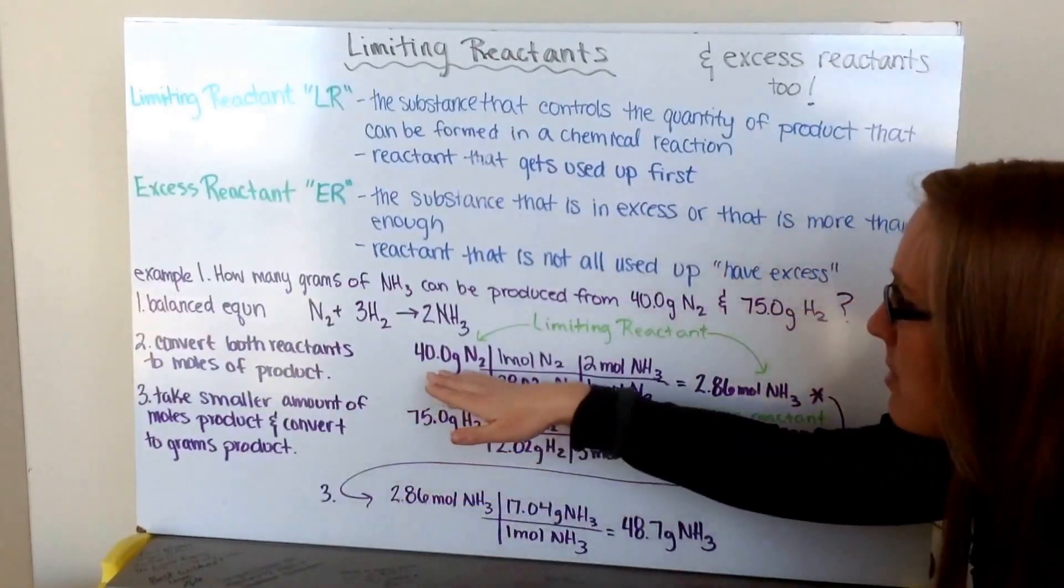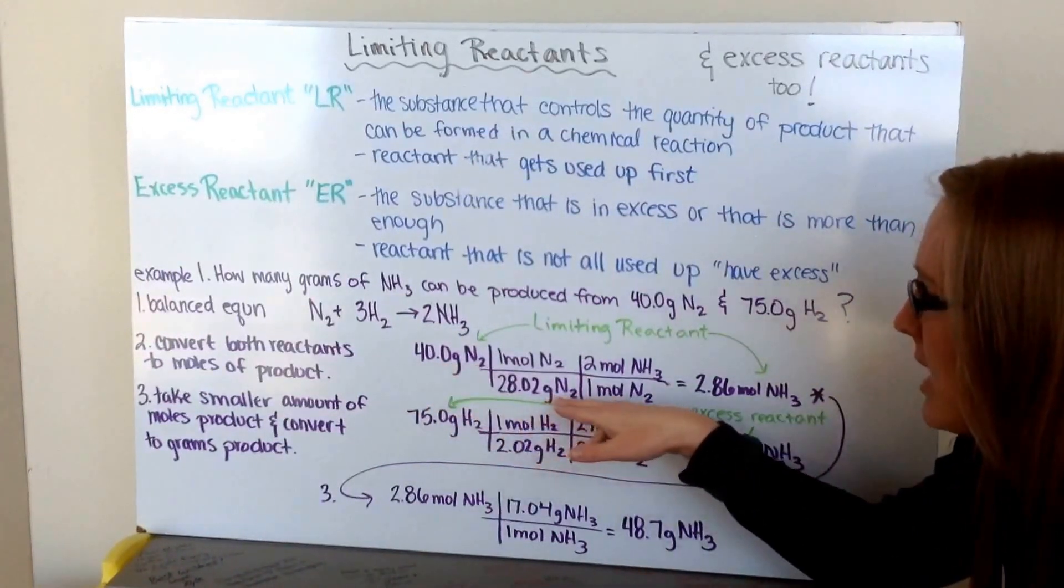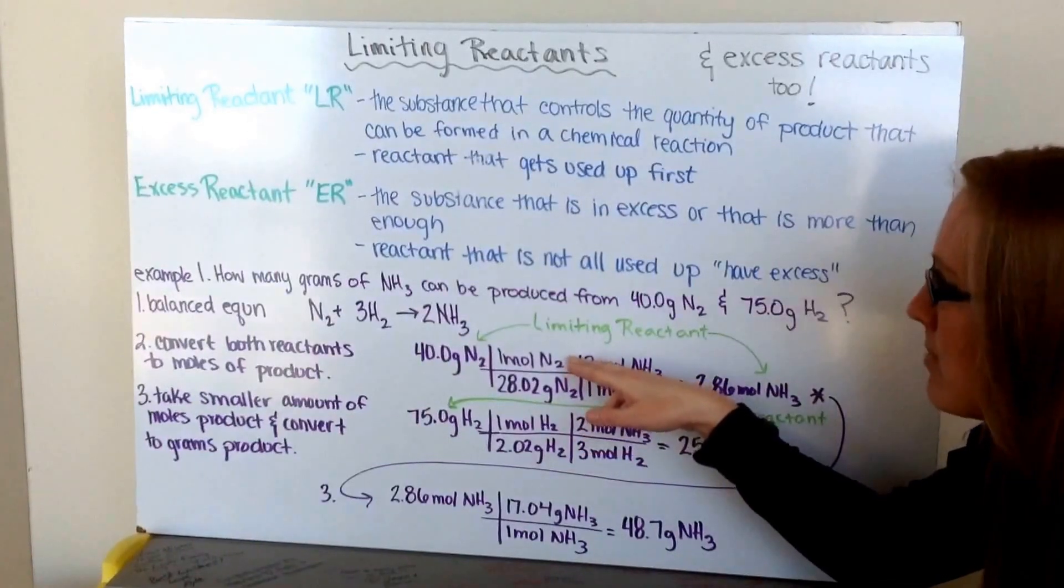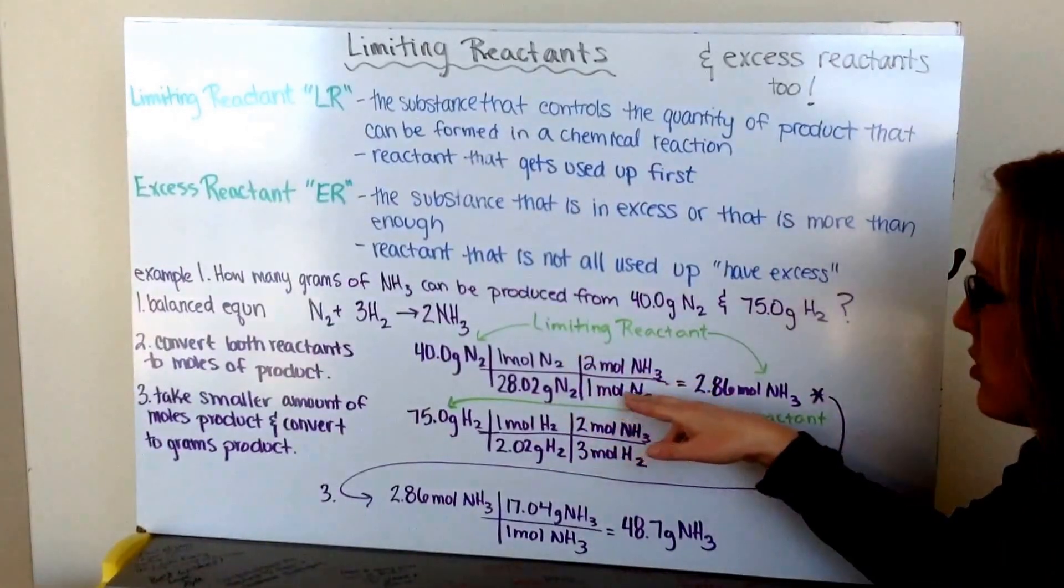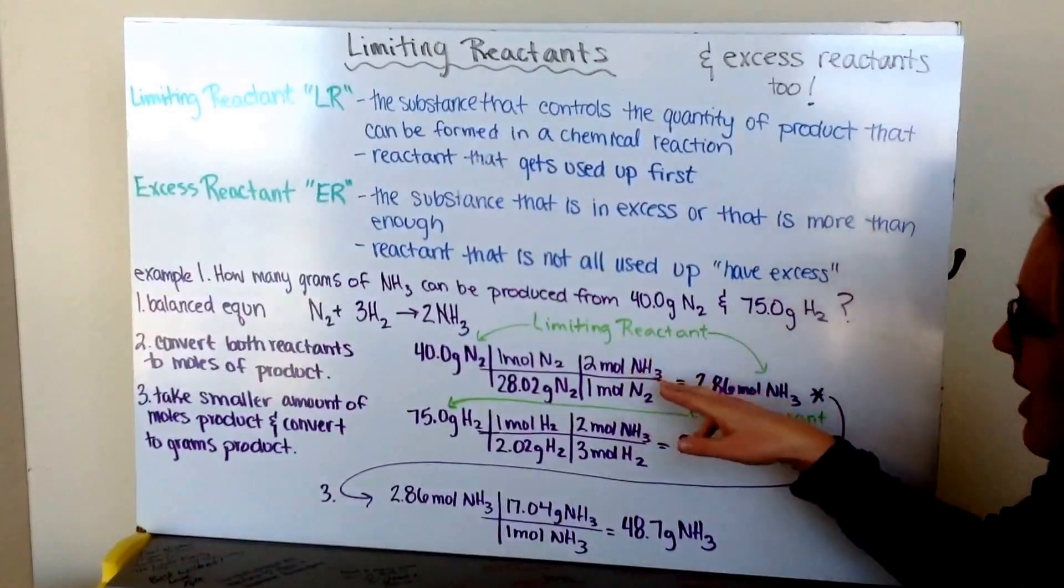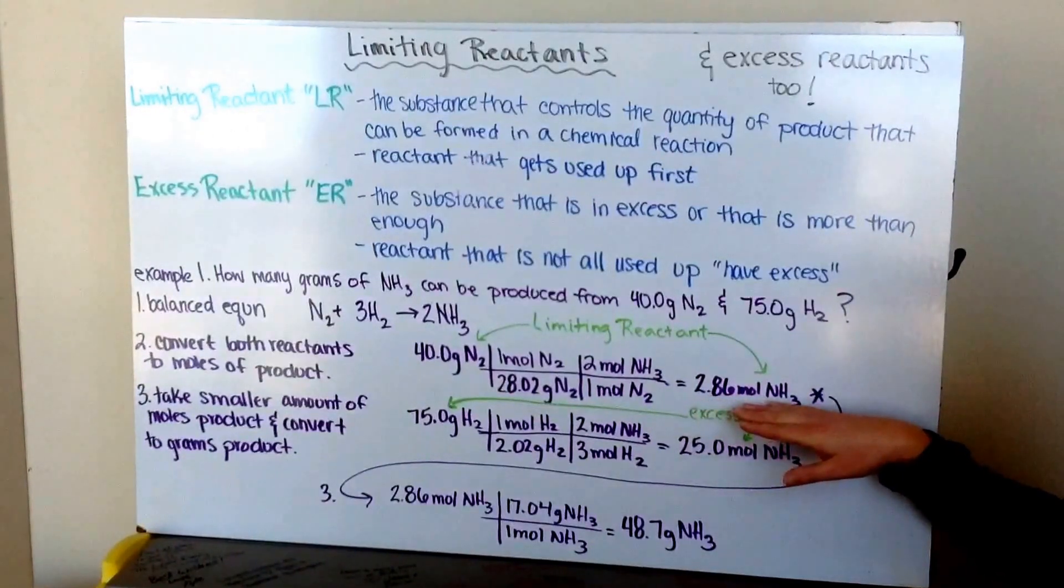So, I take my grams of nitrogen, and I use my molar mass of nitrogen, 28.02 grams per one mole, and my mole to mole ratio of nitrogen to ammonia, one mole of nitrogen for two moles of ammonia, and I get 2.86 moles of ammonia.